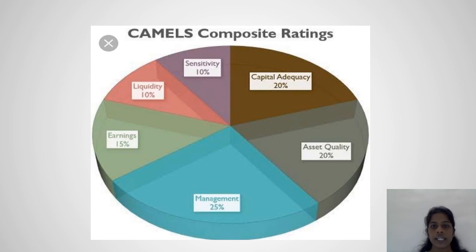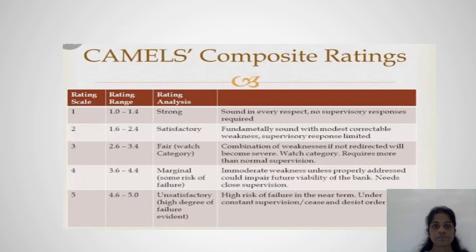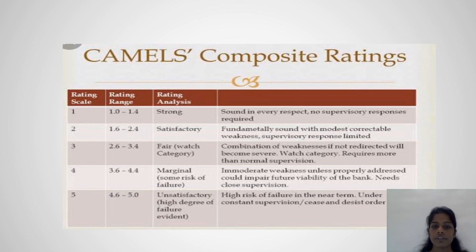The CAMELS composite rating assigns the following weights: Capital Adequacy 20%, Asset Quality 20%, Management 25%, Earnings 15%, and Liquidity 10%. The rating ranges are: 1 to 1.4 is Strong, 1.6 to 2.4 is Satisfactory, 2.6 to 3.4 is Fair or Watch category, 3.6 to 4.4 is Marginal, and 4.6 to 5 is Unsatisfactory, indicating a high degree of failure evident.